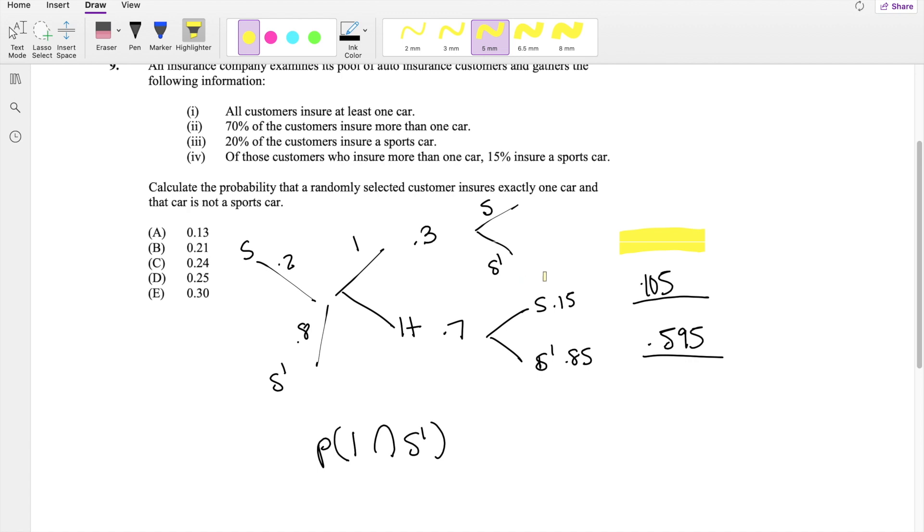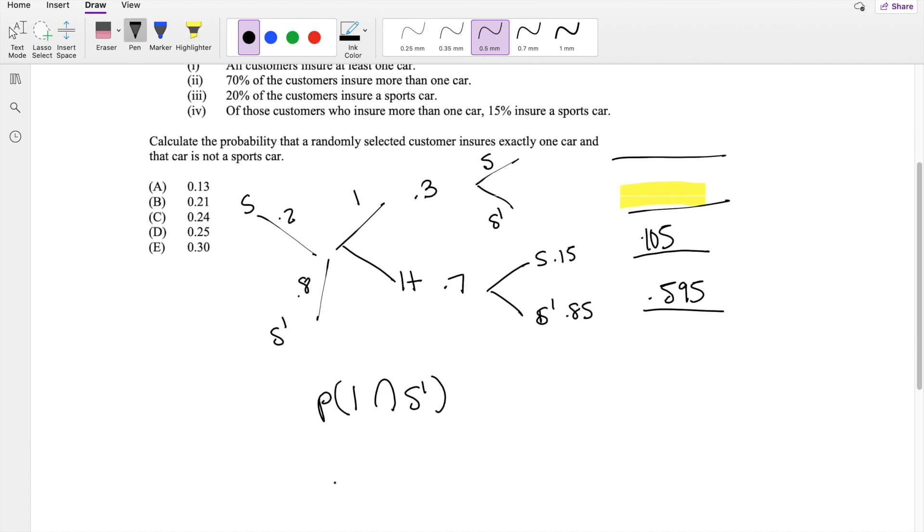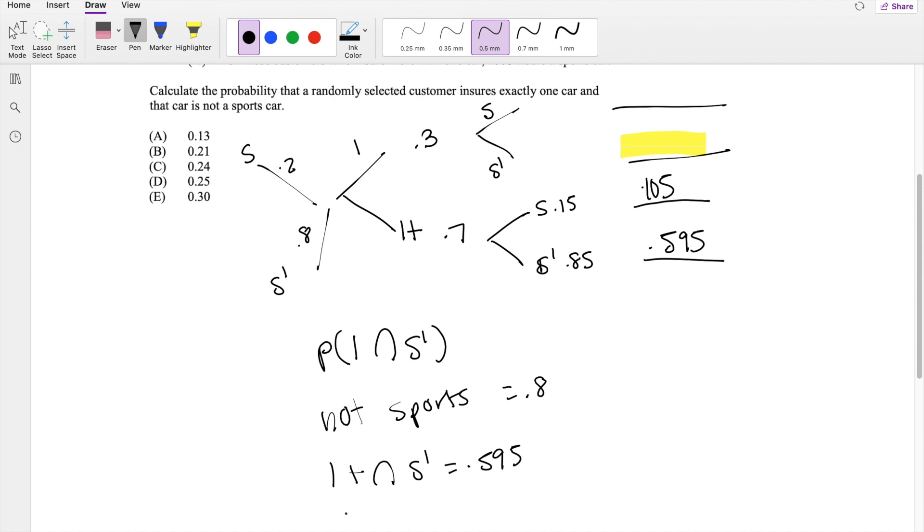Make sure there's one car and not a sports car. If we know that not a sports car is equal to 0.8 right here, and we know that one plus and not a sports car is equal to 0.895, then we know that exactly one car and not a sports car has to be equal to 0.8 minus 0.895.